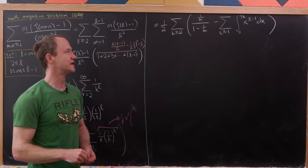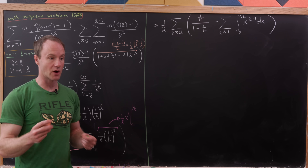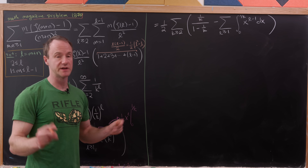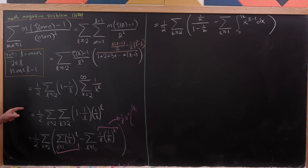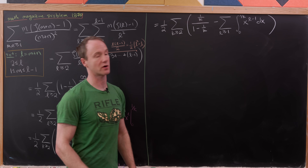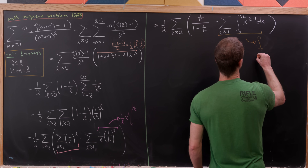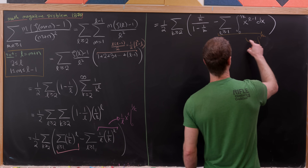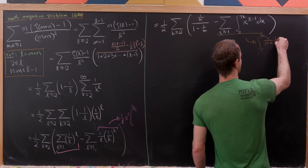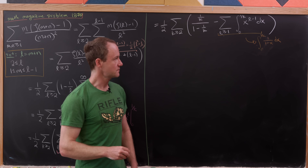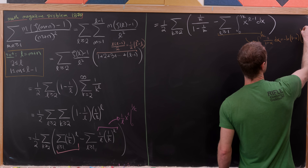Because we're in the region of absolute convergence — working with geometric series on the open interval from 0 to 1 — we can change the order of summation and integration. This lets us rewrite as the integral from 0 to 1 over k of the sum as l is bigger than or equal to 1 of x to the l minus 1, which equals 1 over 1 minus x by the geometric series formula.